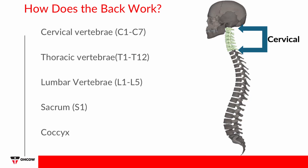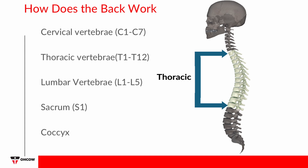The vertebral column consists of seven cervical vertebrae that are flexible, support the head and neck, and protect the spinal cord. There are also twelve thoracic vertebrae that are larger than the cervical vertebrae, largely immobile, allow for attachment of the ribs, form the chest cavity to protect your organs, and protect the spinal cord.